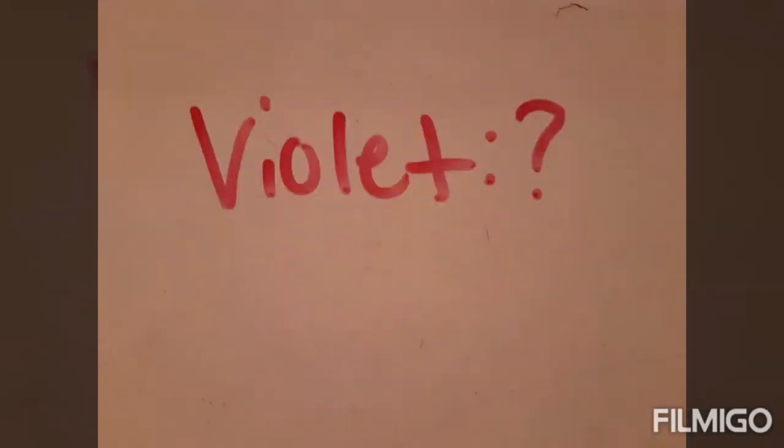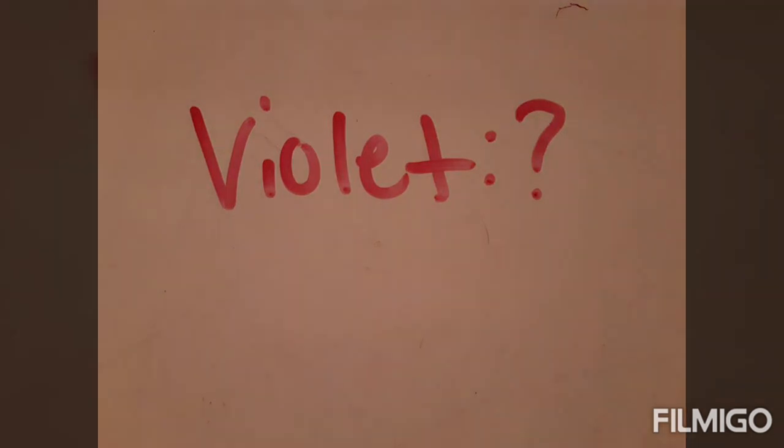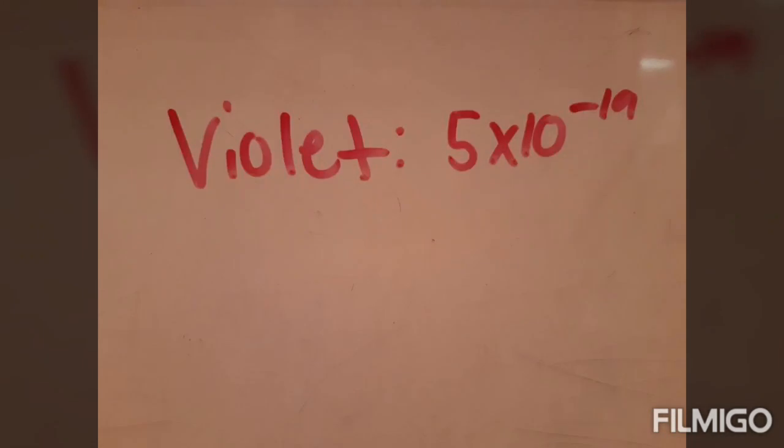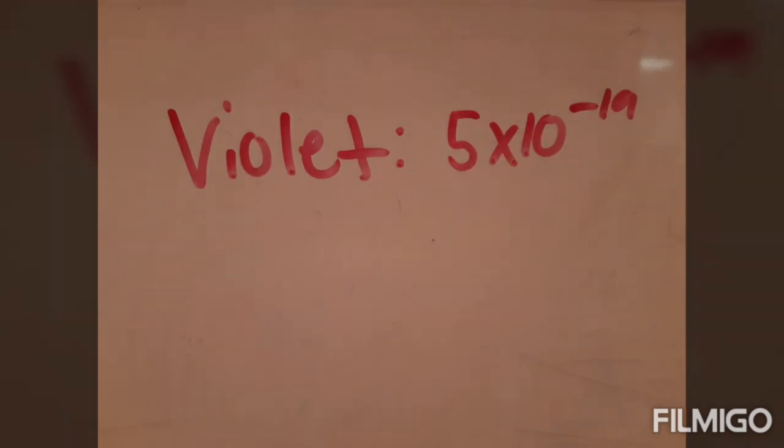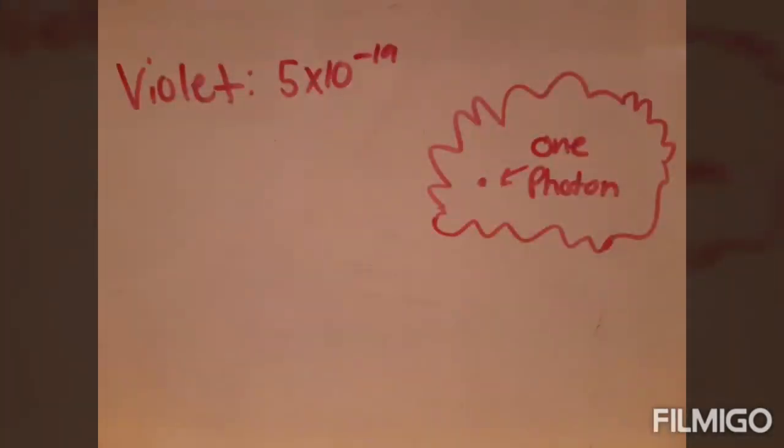Let's say we want to find the energy for violet. Violet's frequency is 7.5 times 10 to the 14th power. We plug that into the equation, multiply it by Planck's constant, and voila! We have the energy for violet, which is 5 times 10 to the negative 19th power. Remember, this is the energy for one photon of violet light, not the whole thing.